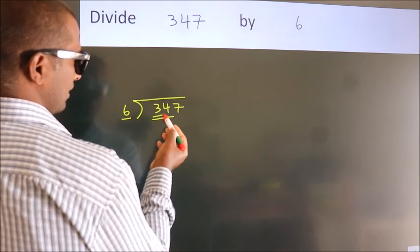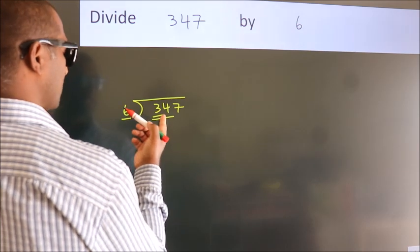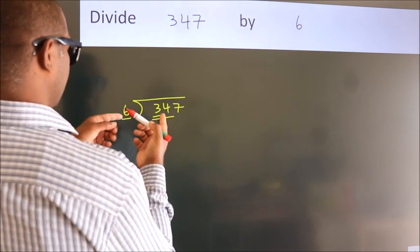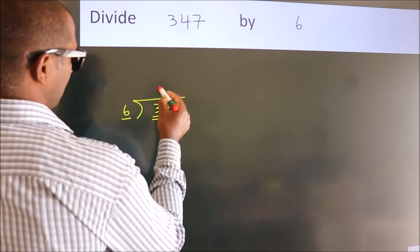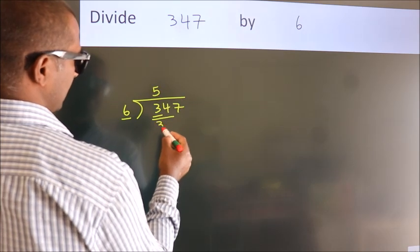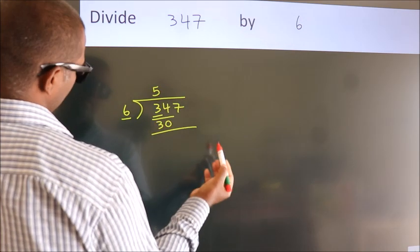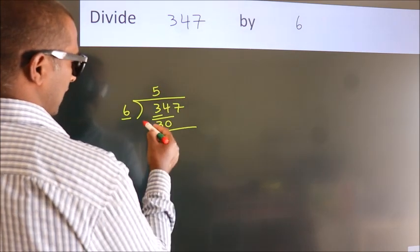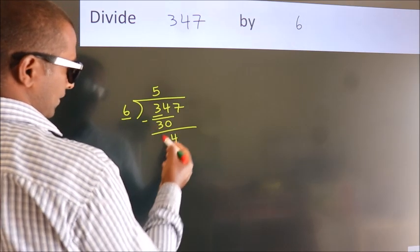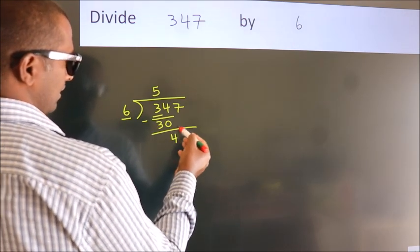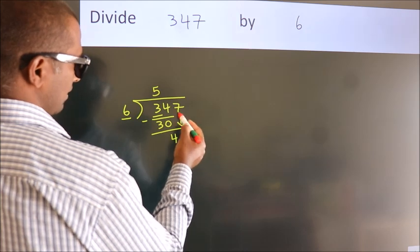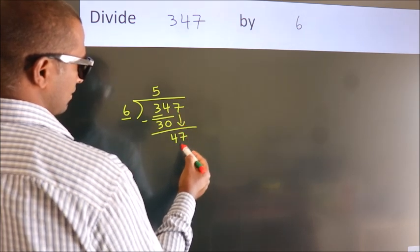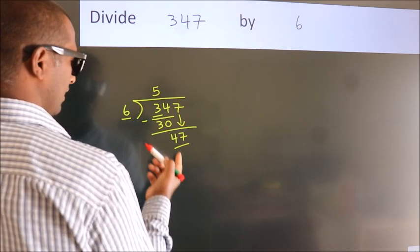A number close to 34 in the sixth table is 6 fives, 30. Now we should subtract. We get 4. After this, bring down the beside number, so 7 down. So 47.